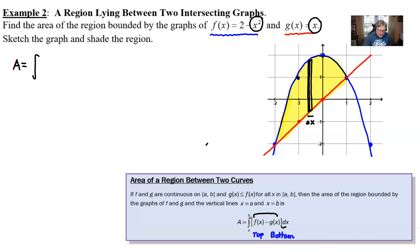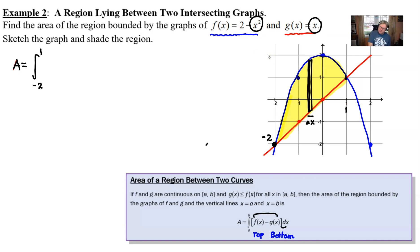The boundaries of integration are the x values of the endpoints — negative 2 and positive 1. Unlike example 1 where boundaries were spelled out, here you have to find the intersections. If you graph, the intersections take care of themselves. If not, set the functions equal to each other and solve. The only other thing that could go wrong is forgetting which function is on top — that would be 2 minus x squared in this case.